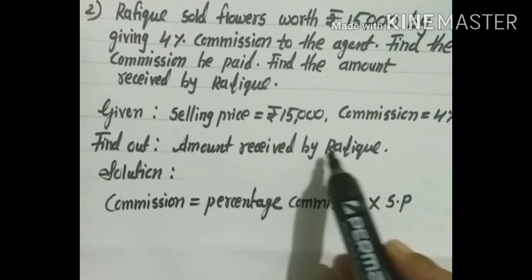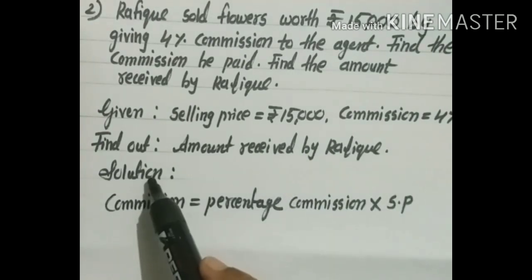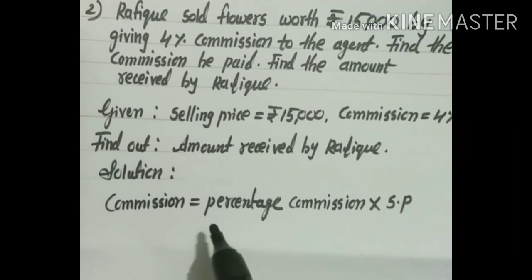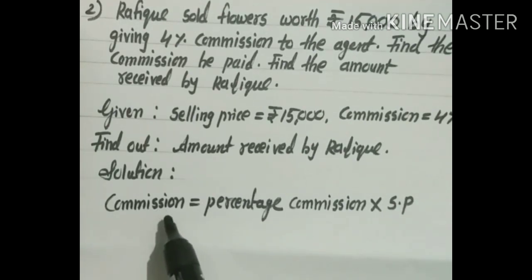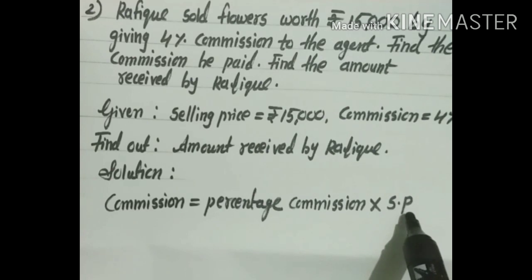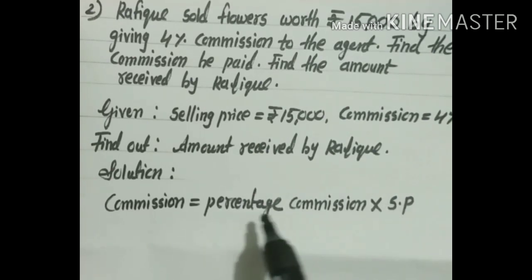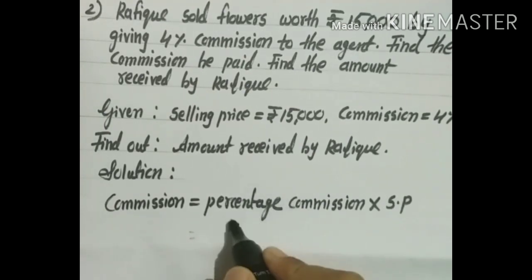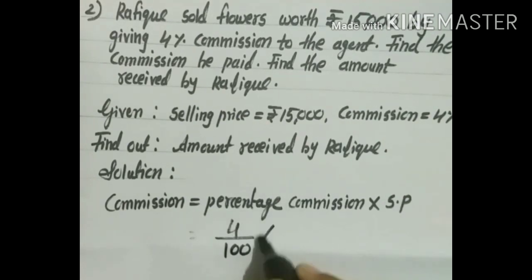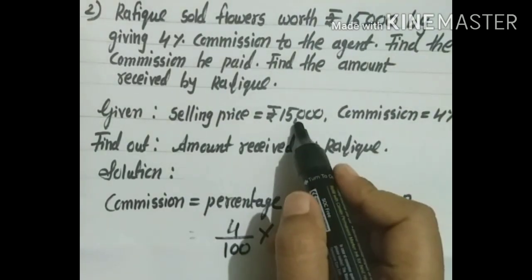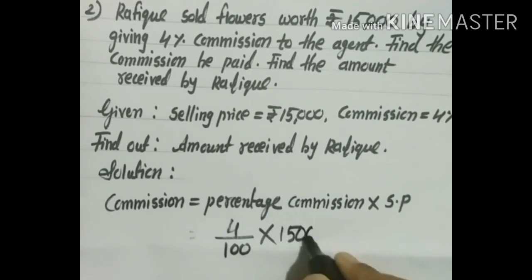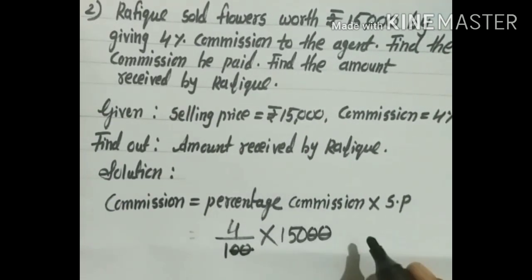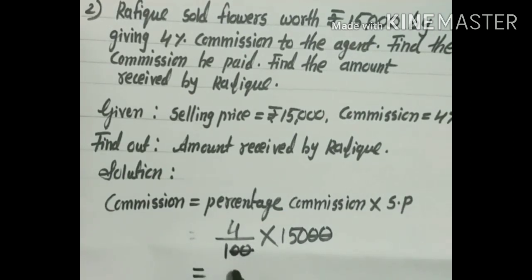Solution: Using the formula, Commission (in rupees) = Percentage Commission × SP. Commission = 4/100 × 15,000. After cancellation, 100 and 15,000 give 150, so we calculate 150 × 4 = ₹600. Therefore, the commission paid by Rafik is ₹600.